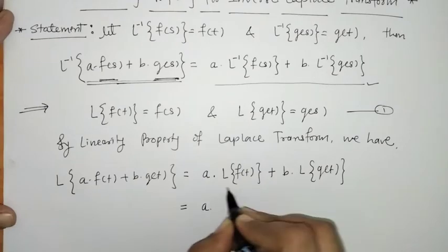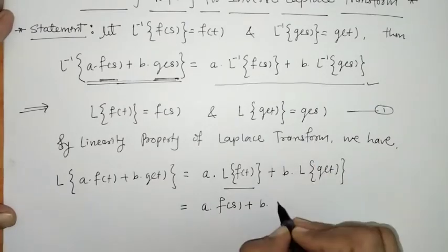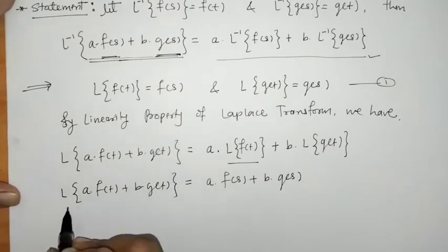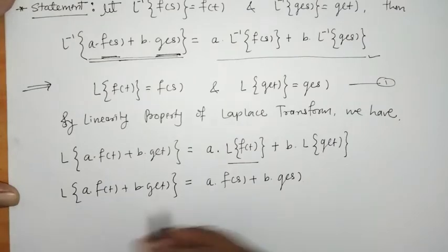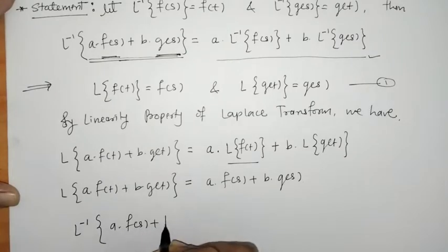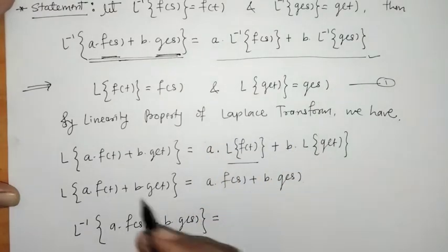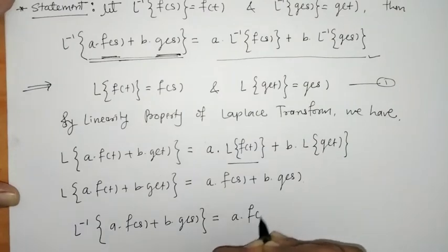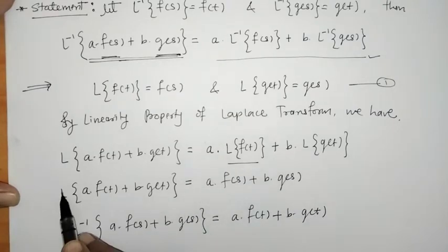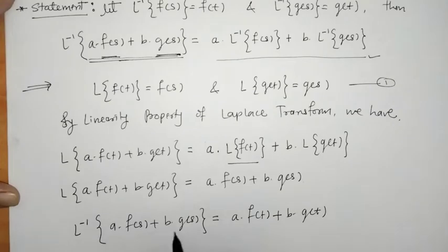So here we have a·F(s) + b·G(s). Now we transfer L to the other side, giving us L⁻¹{a·F(s) + b·G(s)} = a·f(t) + b·g(t), where L becomes L⁻¹ when moved across.